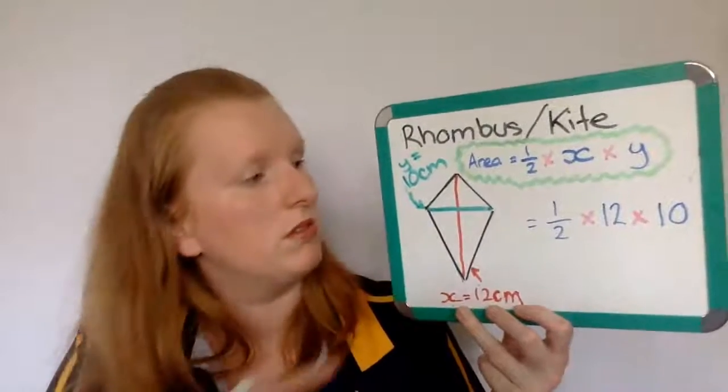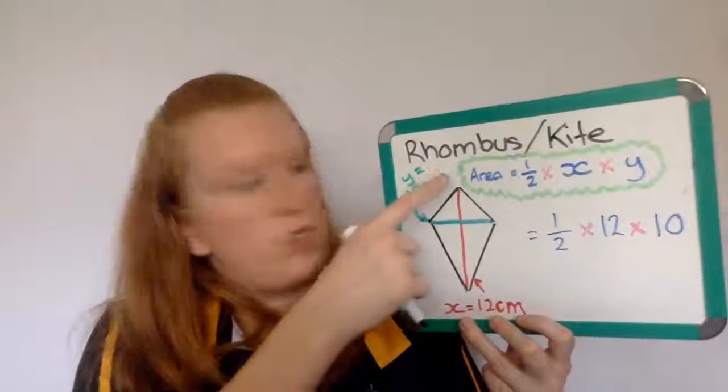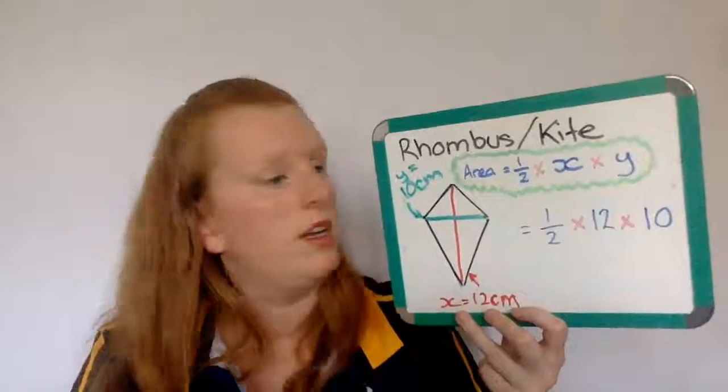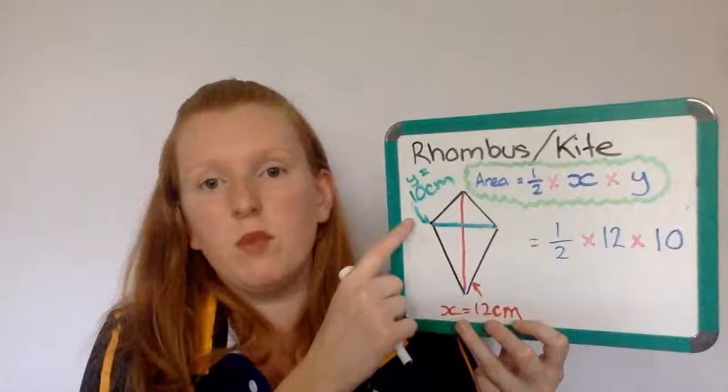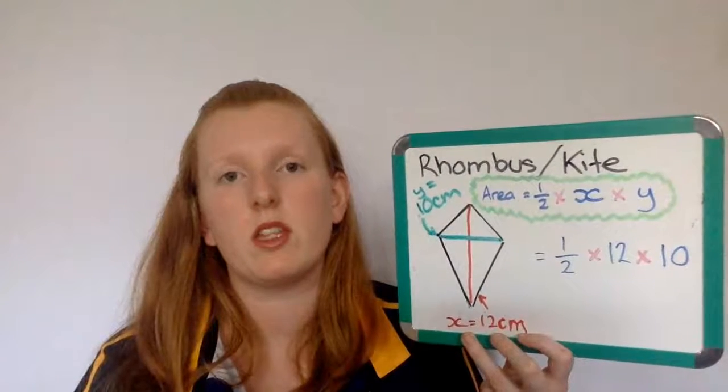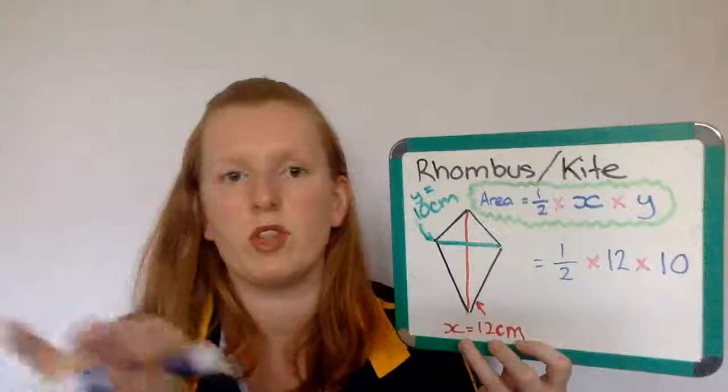Well, it's pretty simple. To find x, you just draw a line from the very top point to the very bottom point, and that's your x. And to find the length of y, you just draw a line from this point over here to this point over here. So they're the two diagonals that cut through the shape.